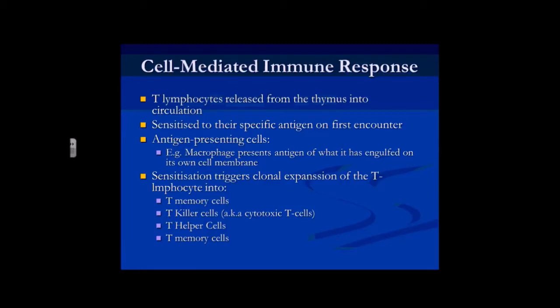These T lymphocytes are sensitised to whatever antigen they are designed for when they first encounter it, and this can be at any point in our lives. Most of the time we encounter antigens for the first time when we're babies and young children, because we encounter everything for the first time at that point. They can encounter antigens via the lymph flowing through the lymph nodes or lymphatic tissue where they are residing.